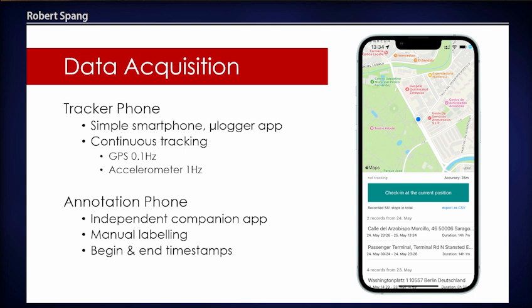This way, annotations captured the general larger concept of a place — an entity that you believe is a connected spot — rather than distinguishing between the bicycle rack and the shop entrance, because that's out of scope for our purpose. Participants were instructed to record every stop that they believed would last longer than one minute, to ensure we didn't accidentally capture waiting at traffic lights, but really capture all the places that are meaningful to them.